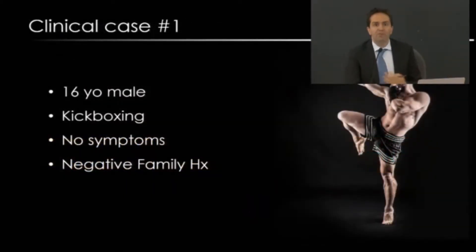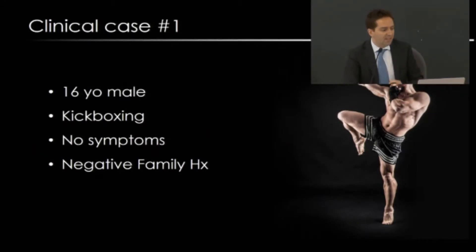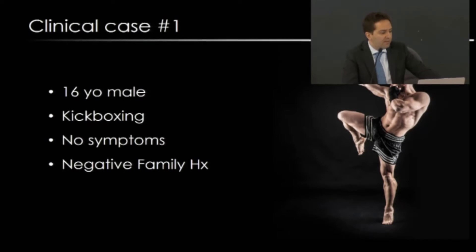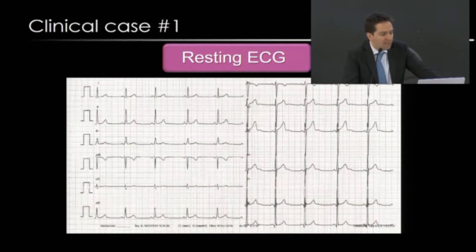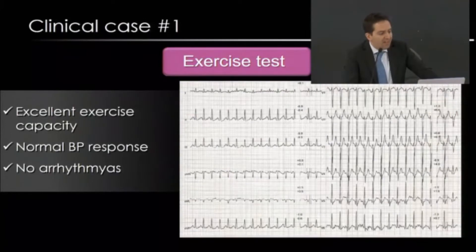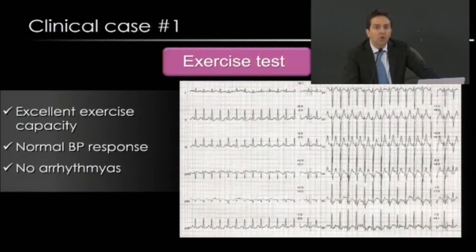I would like to show a couple of examples to illustrate how difficult — and how easy — the diagnosis can be in some cases. The first is a 16-year-old male kickboxing athlete with no symptoms and a completely negative family history. His resting ECG was normal — sinus rhythm, normal axis, normal QRS complexes. On exercise testing, he had excellent exercise capacity, normal blood pressure response to exercise, and did not develop any arrhythmia.